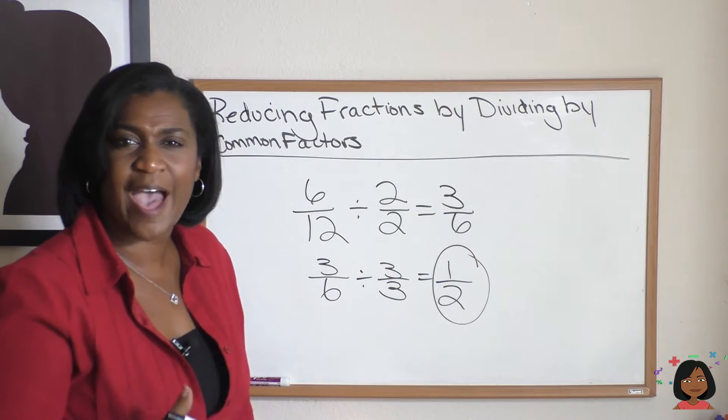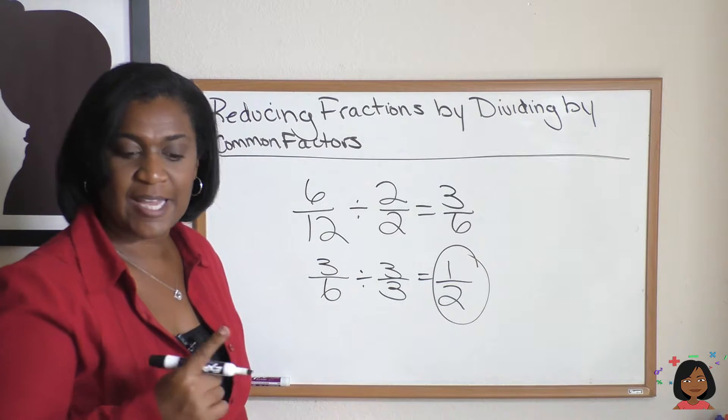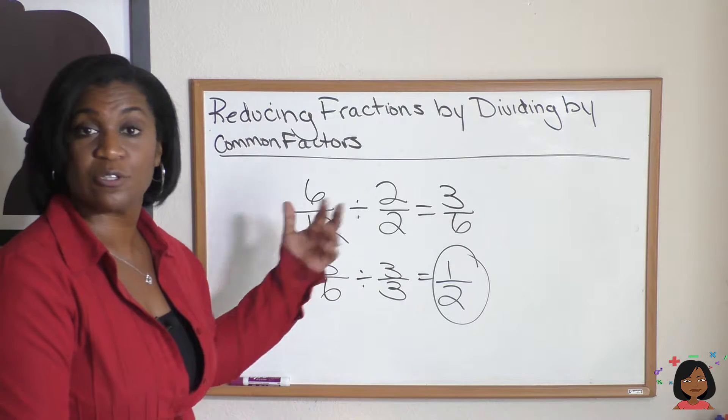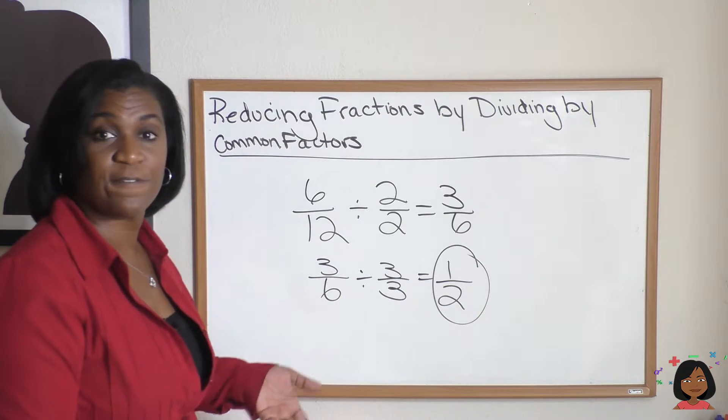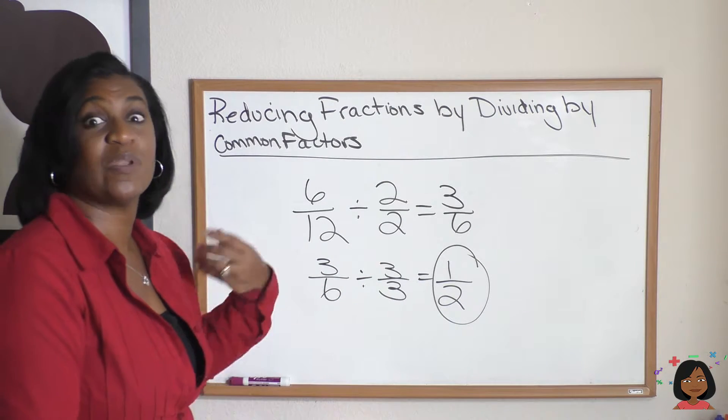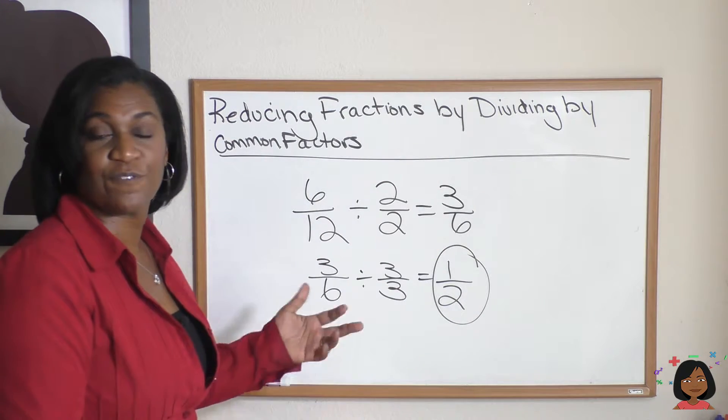So the question is, why did we have to do it twice? Let's take a look back at our 6/12. We chose 2 as our common factor, which is perfectly fine. It just means we had to do it again when we got an answer of 3/6.